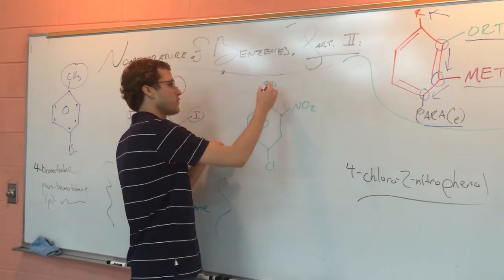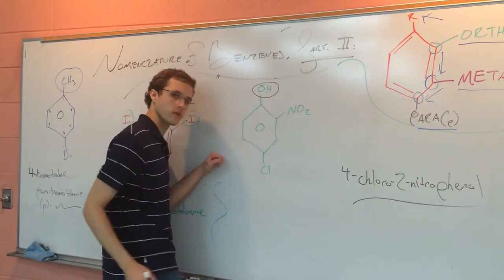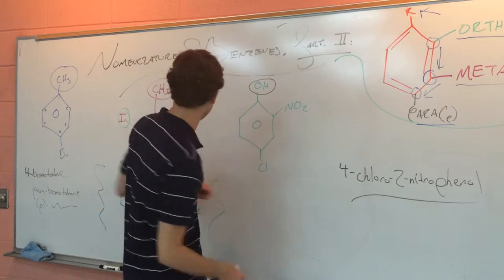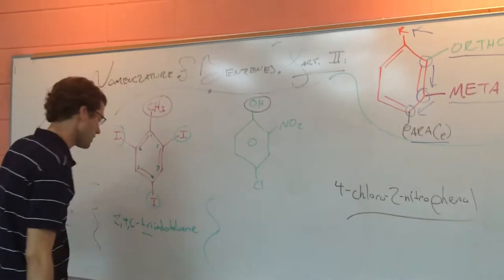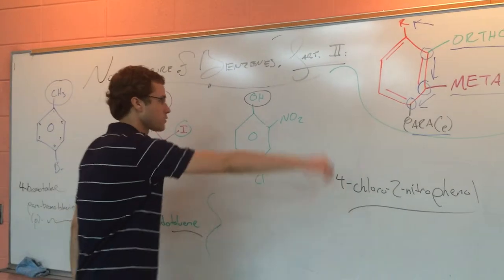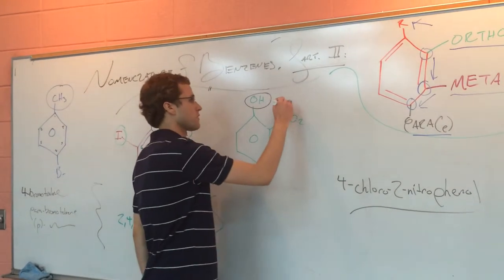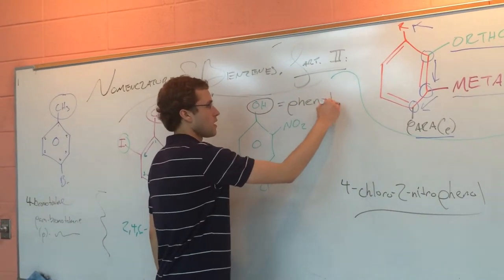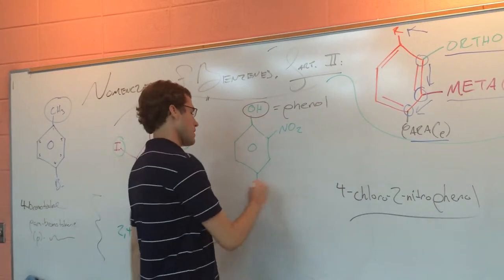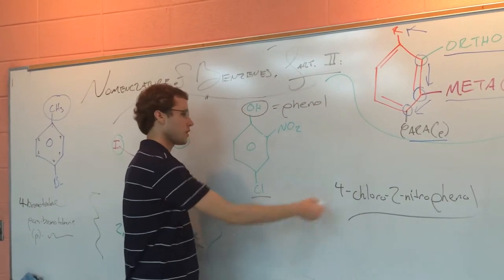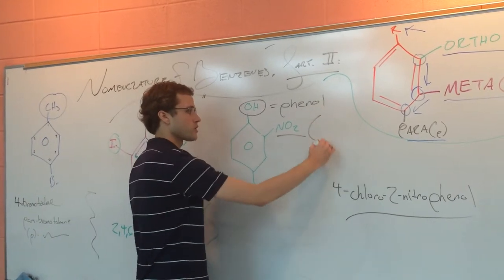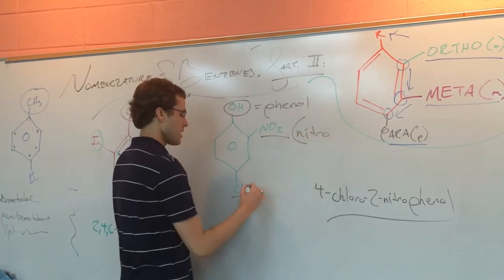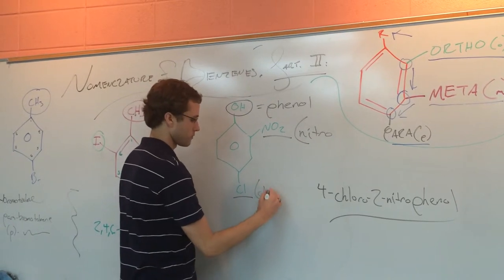If you remember from the last video, we have OH, which is going to make this not end with the suffix 'benzene' but with the suffix 'phenol' — just like the previous two had the suffix 'toluene'. What other groups do we have attached? Well, we have a chlorine and an NO2, so this is going to add 'nitro' to the compound, and the chlorine is going to add 'chloro'.